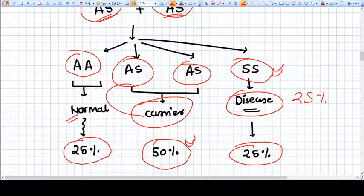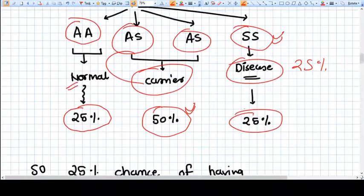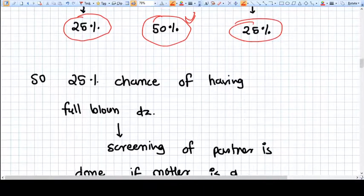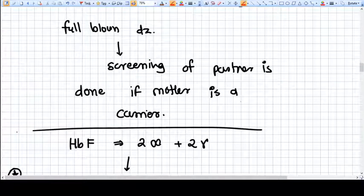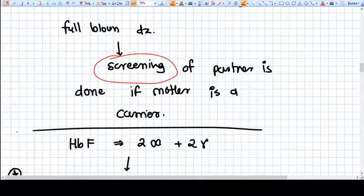So when we screen a partner and if we find that yes, the partner is a carrier, then we need to screen the other partner also.